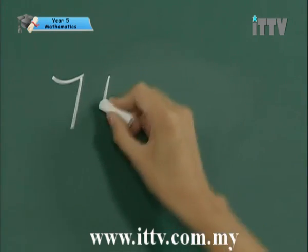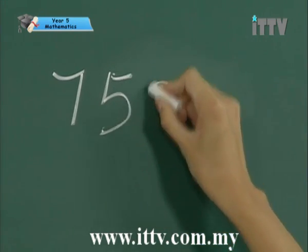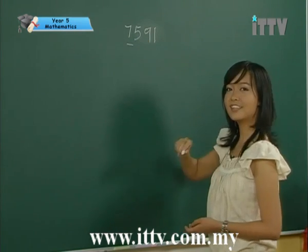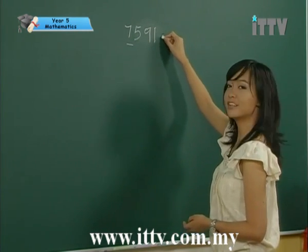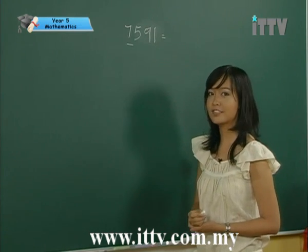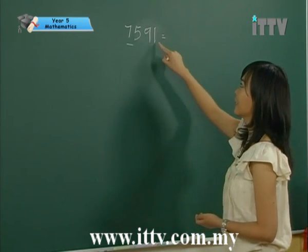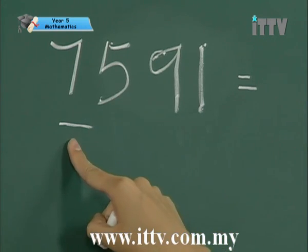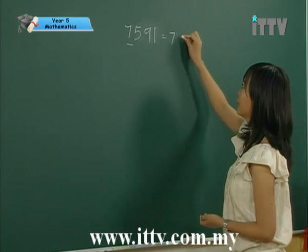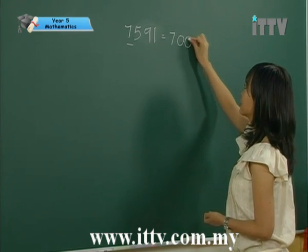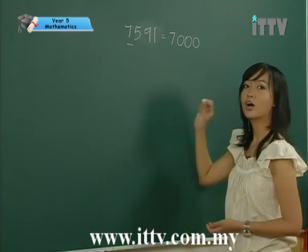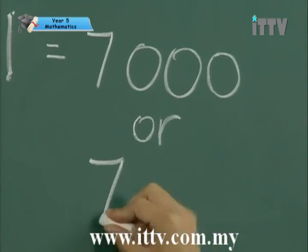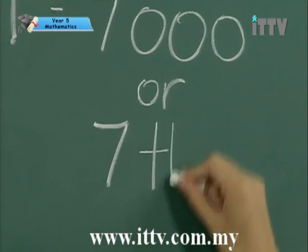We have 7591. By underlining 7, can you tell me the place value of this number? Ones, tens, hundreds, thousands. So we have seven thousands, or we can also write it as 7000.